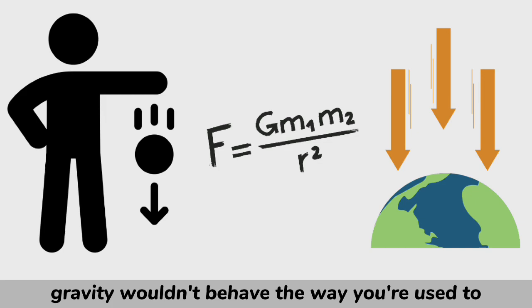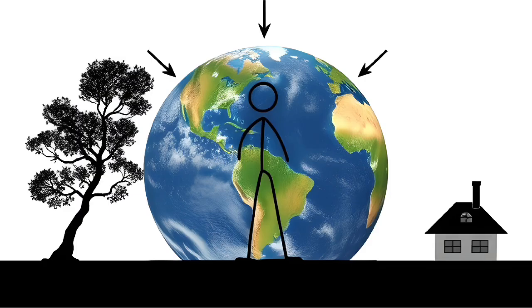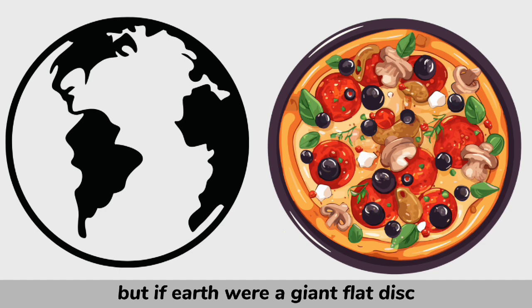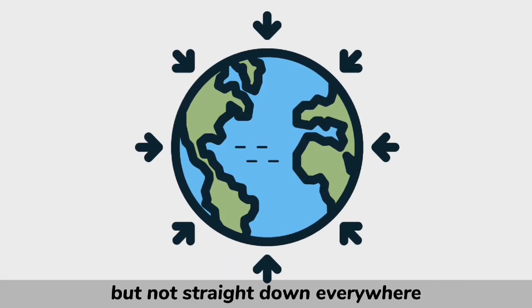First, gravity wouldn't behave the way you're used to. On a round Earth, gravity pulls everything toward the center of the planet. But if Earth were a giant flat disk, gravity would still pull toward the center, but not straight down everywhere.